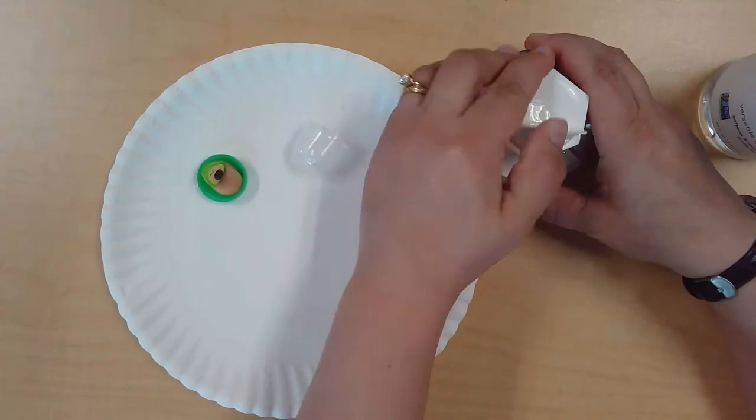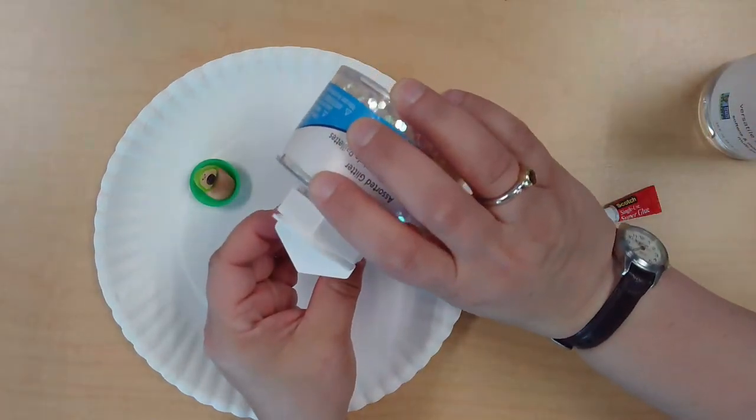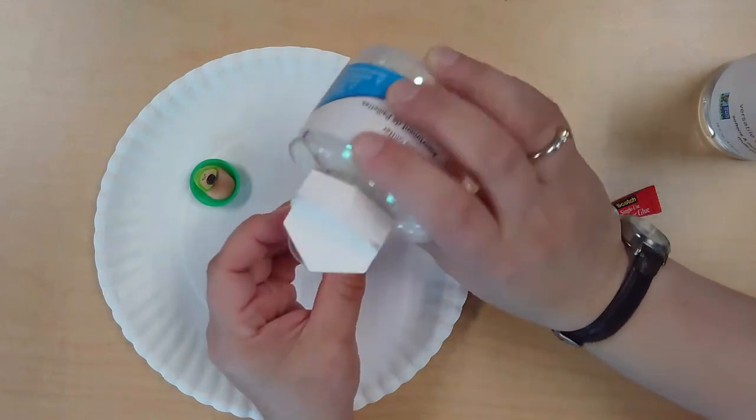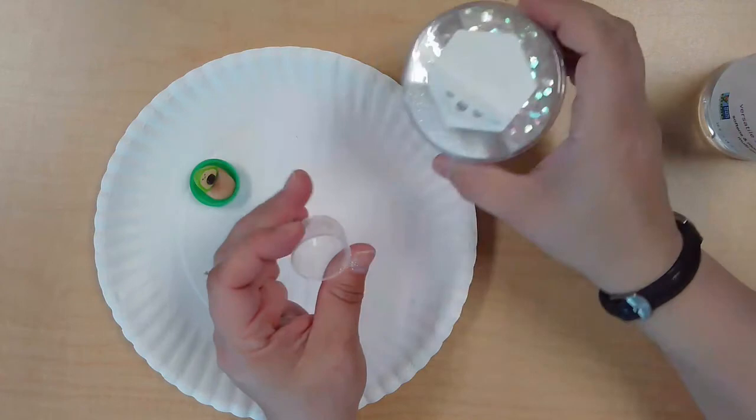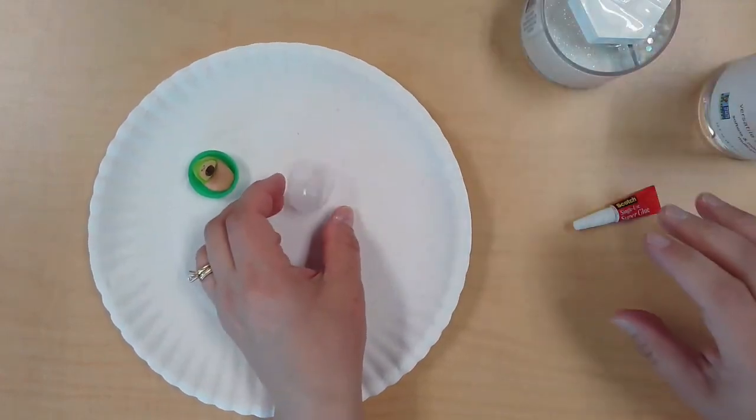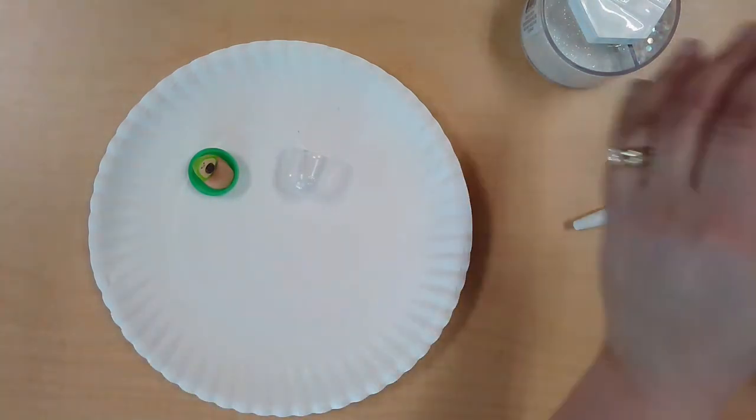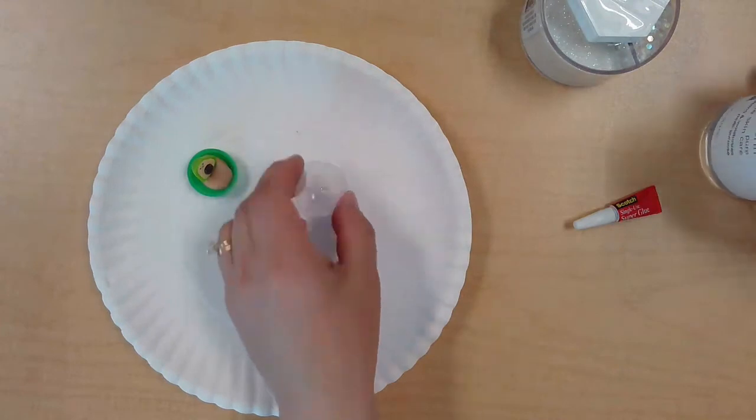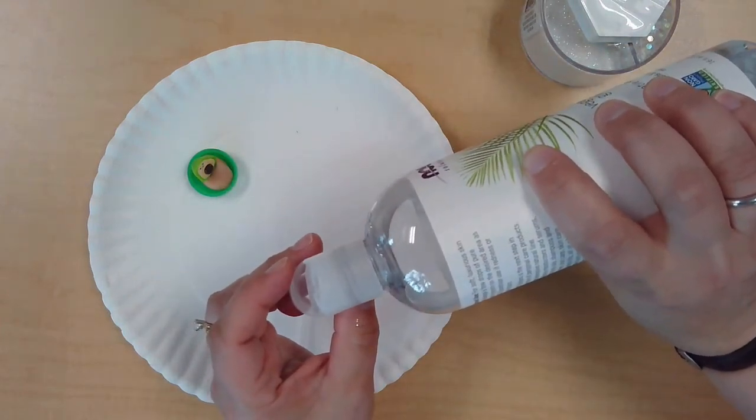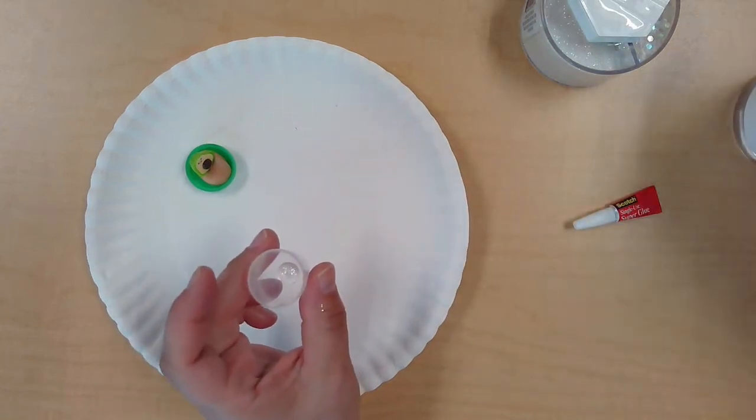I'm going to start by sprinkling some glitter into my lid. You don't need to use a lot unless you really like the way it looks when it's snowy. Then you just need a couple drops of glycerin - this helps your glitter not all sink to the bottom right away when you shake your snow globe. Just a couple drops.